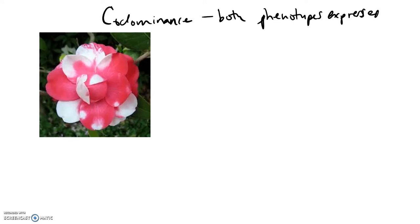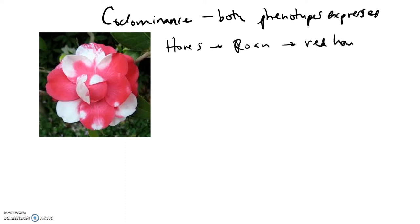If we did a Punnett square, it would be the same type of situation. If you had one allele of the red flowered plant and one allele from the white flower, instead of getting a pink flower, you're getting a flower that has both red and white portions on it. Another example is in horses, which have what's called roan coloring — when you have red hair and white hair expressed at the same time, the result is a phenotype with both hairs, called a roan coat coloring.